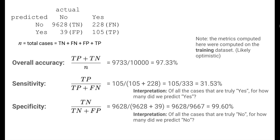Specificity is another class-specific accuracy measure giving the percentage of true noes predicted to be no — the percentage of actual non-defaulters we predict to not default. There are 9,667 people who did not default, and we detected 9,628 of them, or 99.6%. Our model is better at accurately predicting non-defaulters than defaulters. However, all these metrics have been computed on the training data, so we should use cross-validation to get a better picture of the model's performance.